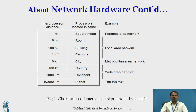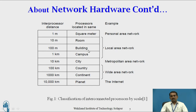About network hardware — inter-processor distances. At one square meter, an example is a PAN device. At 10 meters, the processor is in a room; at 100 meters, in a building; at 1 kilometer, on a campus. These three distances can be used in a Local Area Network.